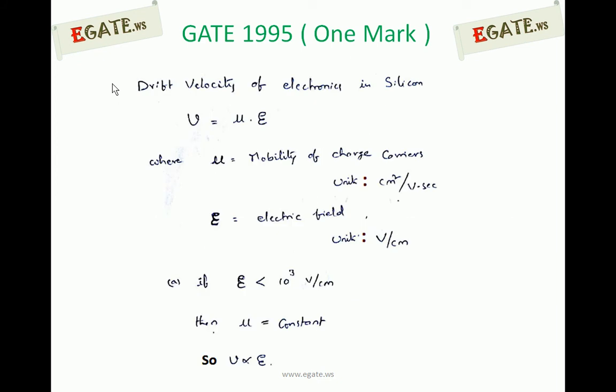Drift Velocity of Electrons in Silicon is given by V equals Mu into E, where V is the drift velocity of electrons, Mu is the mobility of charge carriers with units of centimeter squared per volt-second, and E is the electric field with units of volt per centimeter.